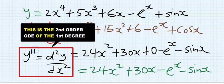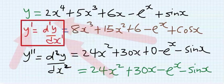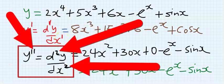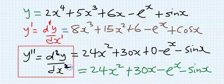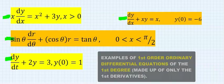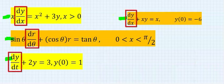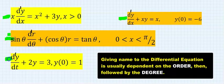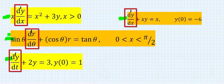In the first order differential equation, the highest power is one. In the second order differential equation, the highest power is two. These are problems of ordinary differential equations — each is an ordinary differential equation of the first degree, hence each of them is a first order linear differential equation because the highest power is one.